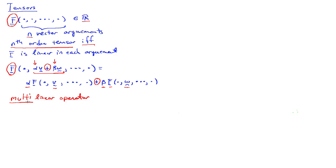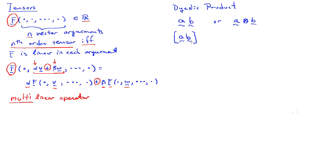The first simple tensor we looked at was the dyadic product. That dyadic product is generated using two vectors, say a and b. One notation is just writing them side by side, or the outer product notation, though we'll stick with the first notation since that's what Dr. Slaughter uses in his book. We defined this originally as: a, b acting on a vector v is defined to be the number b dot v times the first vector a.